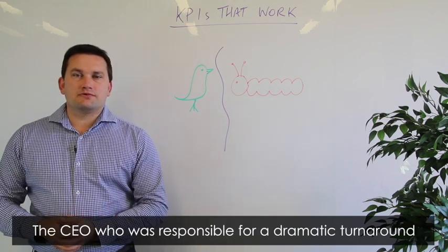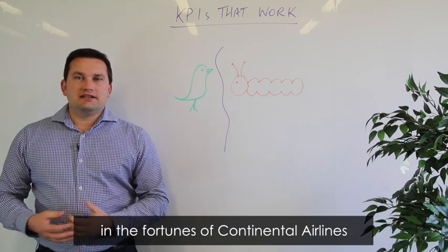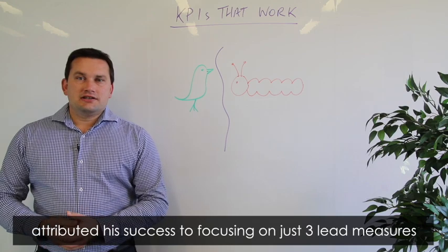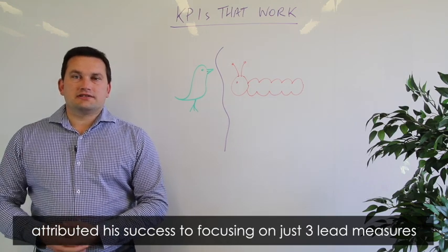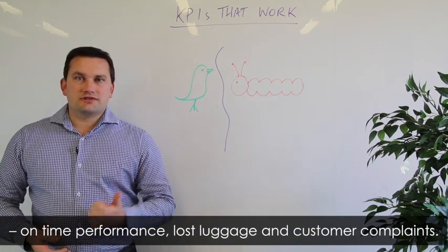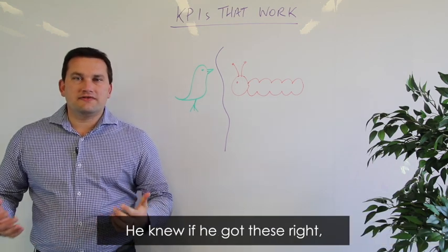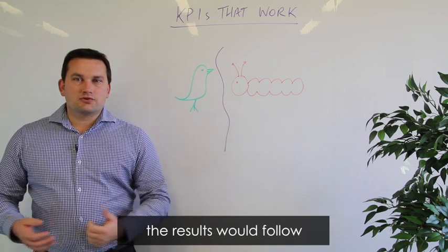So the CEO who was responsible for a dramatic turnaround in the fortunes of Continental Airlines attributed his success to focusing on just three lead measures: on-time performance, lost luggage and customer complaints. And he knew if he got these right, the results would follow.